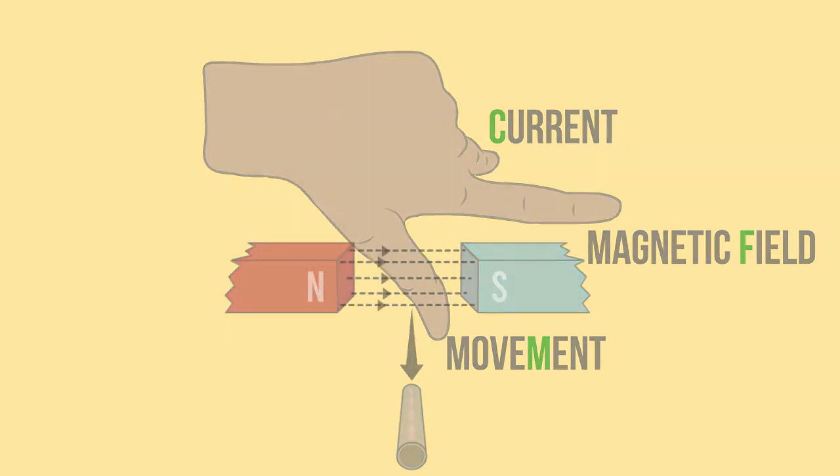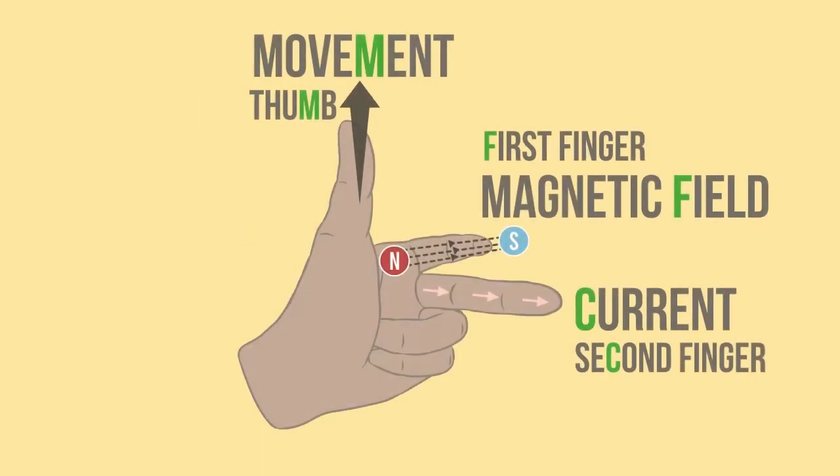Fleming's left hand rule is a simple and accurate way to find the direction of force or motion of a current carrying conductor when the magnetic field direction and current direction are known.